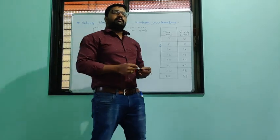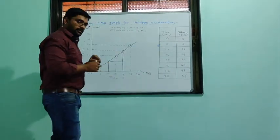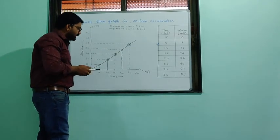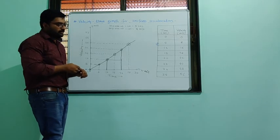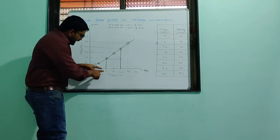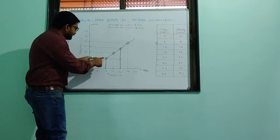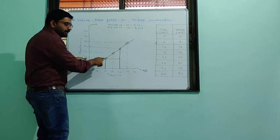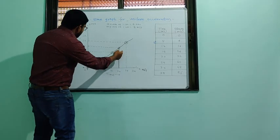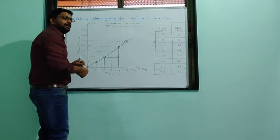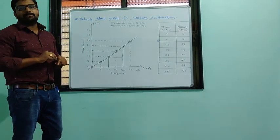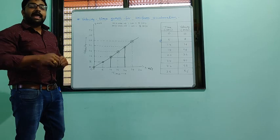One question based on this graph: how much distance will we cover from 10 to 20 seconds using this graph? At 10 seconds, velocity is 16 m/s, and at 20 seconds it is 32 m/s. Since velocity is not constant, we must take the average velocity.